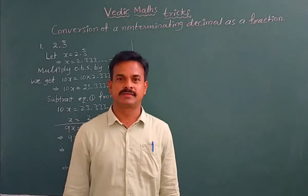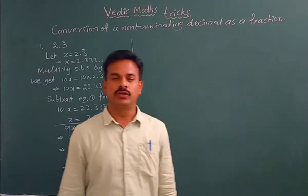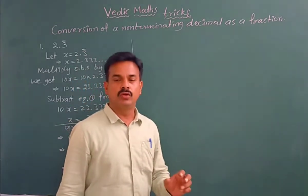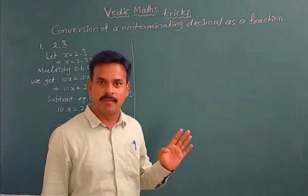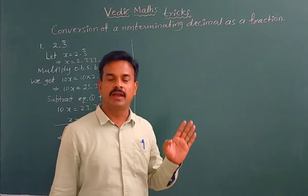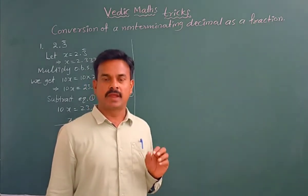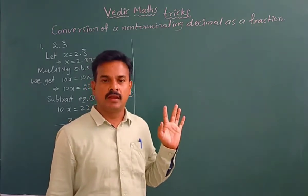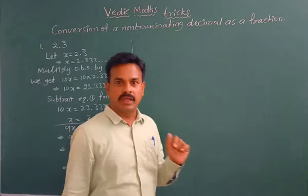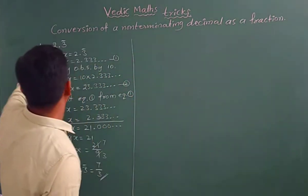Hi viewers, today we are going to learn how to find a fractional form of a non-terminating recurring decimal in 10 seconds only. In 10 seconds we can find it. Now I am taking one example, once you see 2.3 bar.